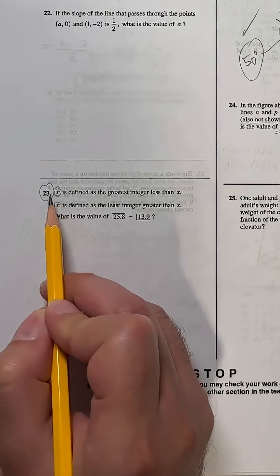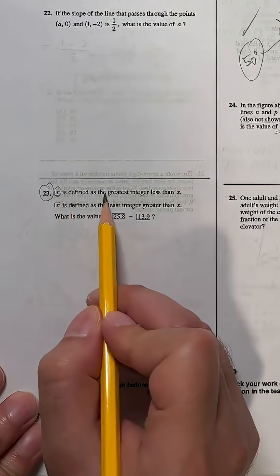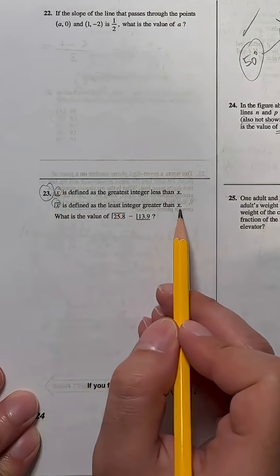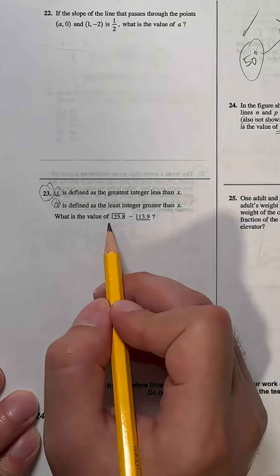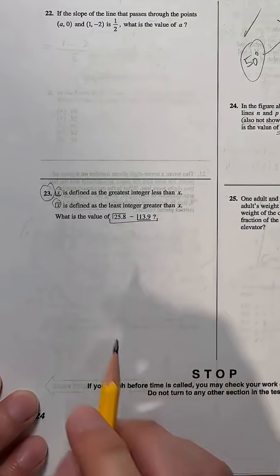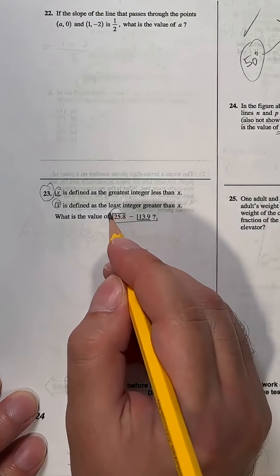So we read the question as: The floor of x is defined as the greatest integer less than x. The ceiling of x is defined as the least integer greater than x. What is the value of the ceiling of 25.8 minus the floor of 13.9?